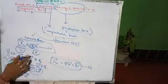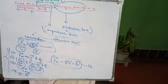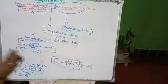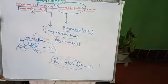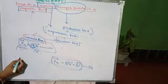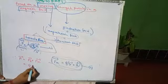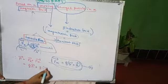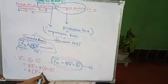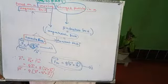When both forces are simultaneously acting, the resultant force on the charge particle is called the Lorentz force. So F equals F_E plus F_M, which gives Q times E vector added with Q times (v cross B). Taking Q as common: F = Q(E vector + v cross B). This is the Lorentz force expression, which is very important.